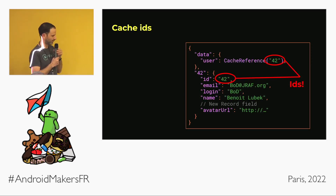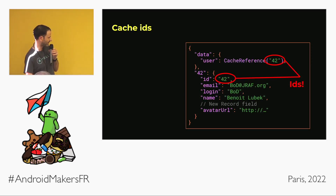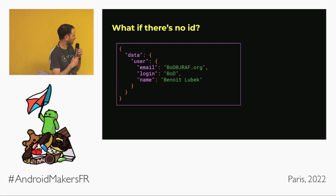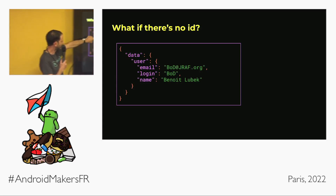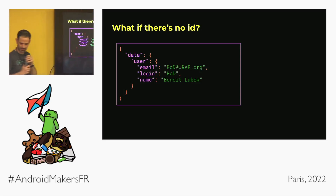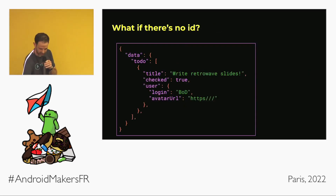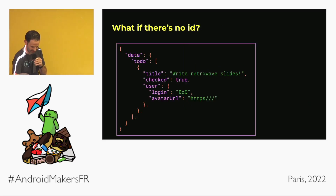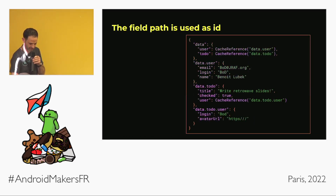The important thing is that we use IDs. If we didn't have IDs we would use the path to the data — something like data.user — but that approach has a bad consequence: it duplicates a lot of data.